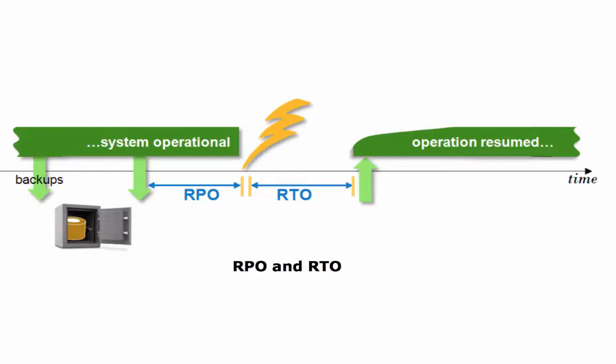Should we have lost, in our example, not only the disk with data files, but also the redo log files? This would mean that we could only restore the database from backup, but not do any recovery. In this case, RTO would be short, but the recovery point will definitely not be where we would like it to be. As with the loss of the redo logs, we would also have lost valuable data as well.